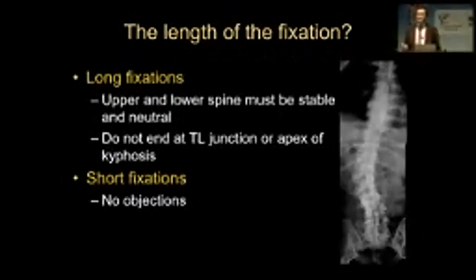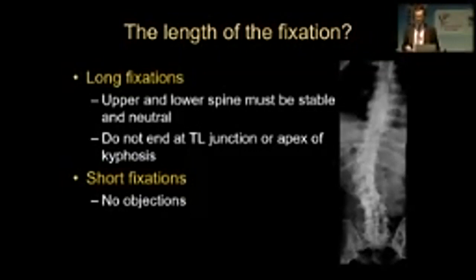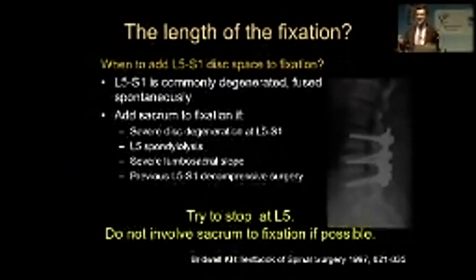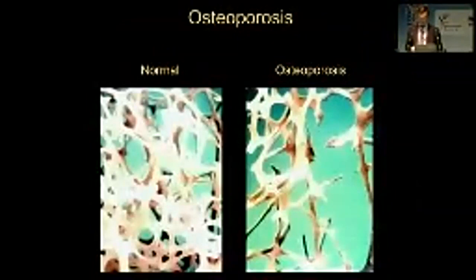There are no objections for short fixations. However, in long fixation, the upper and lower spine must be stable and neutral. We must not end at the thoracolumbar junction or the apex of kyphosis. We must try to stop at L5 and try not to involve the sacrum in fixation if possible, because the lumbosacral junction is another junctional level, and if we add fixation at this level, the non-union rate is quite high. There are some indications for when to add L5-S1 to fixation.